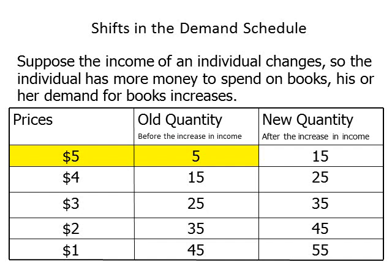Before the individual's income has increased, the quantity demanded when the price of the book is $5 is 5 books. After the person's income increases, the quantity demanded changes from 5 to 15 books when the price is $5. Similarly, before the income increase, at a price of $3 per book, the individual demands 25 books. After the income increase at a price of $3, the quantity demanded changes to 35 books. Notice that at each price, the amount demanded increases.